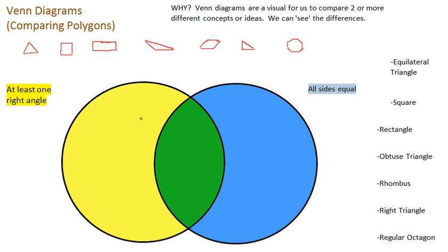I've colored this section yellow. For this particular Venn Diagram, that means everything in the yellow is going to match whatever this criteria is, which I've also highlighted yellow. So everything in this area has to have at least one right angle.